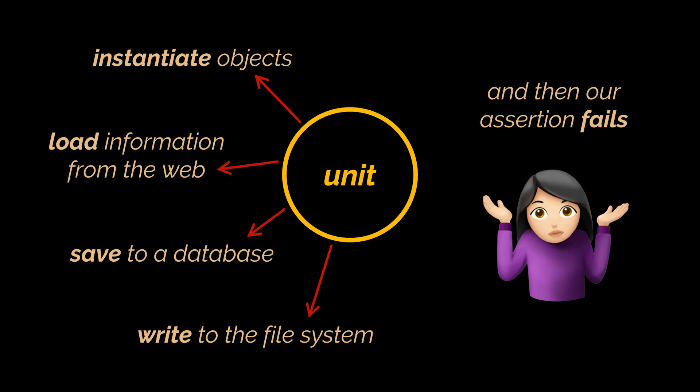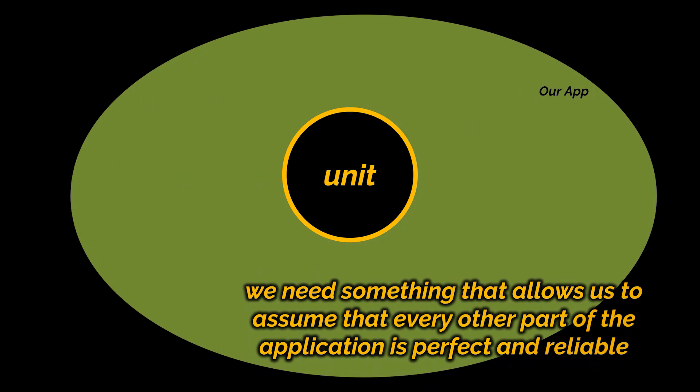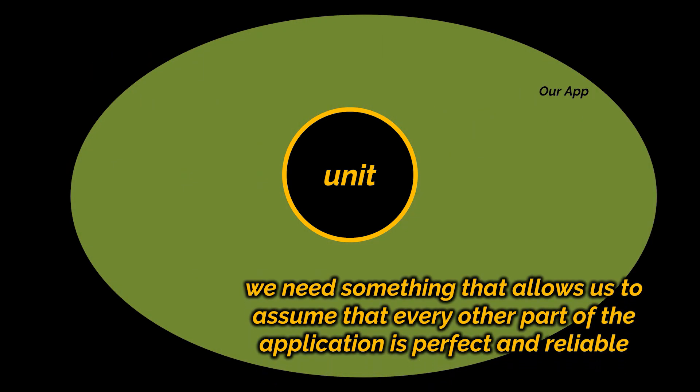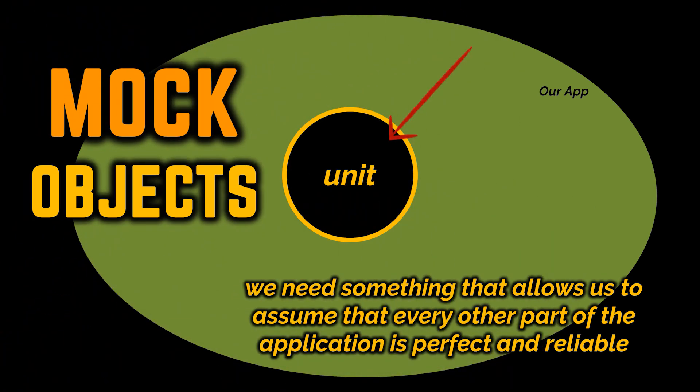So how do we solve this? While testing a particular unit, we need something that allows us to assume that every other part of the application is perfect and reliable, so we can focus our tests purely on the current unit. If a problem occurs, we know exactly where that problem is.